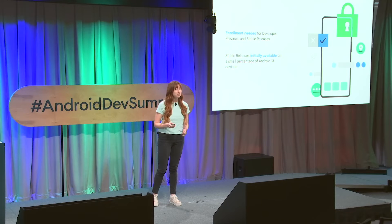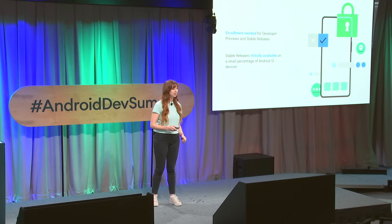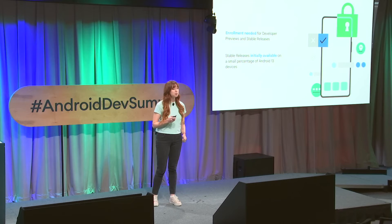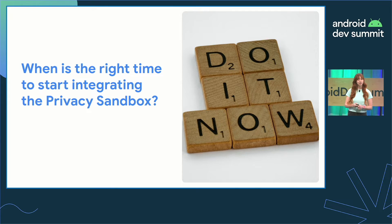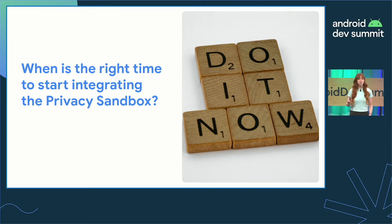To test against developer previews and stable releases, developers will need to complete an enrollment process that enables access to the Privacy Sandbox. When the first stable API is released, the Privacy Sandbox will initially be made available on a small percentage of eligible Android 13 devices. The best time to start testing the Privacy Sandbox is right now. The sooner developers can start incorporating the Privacy Sandbox, the more action we can take on any feedback you might have during your integration. We need your help to make the best product that we can.